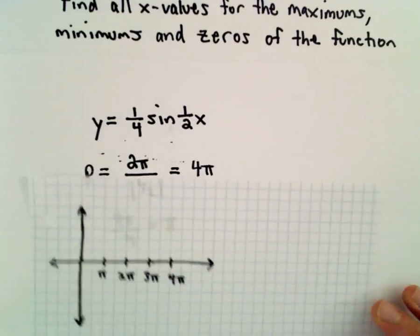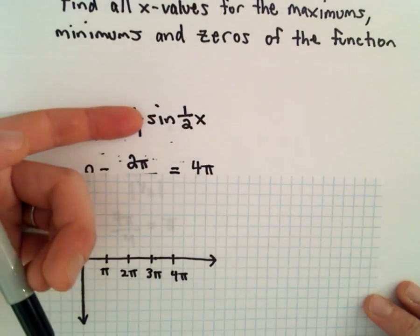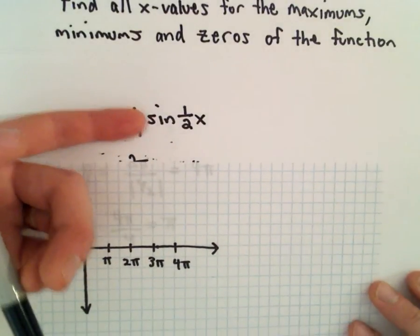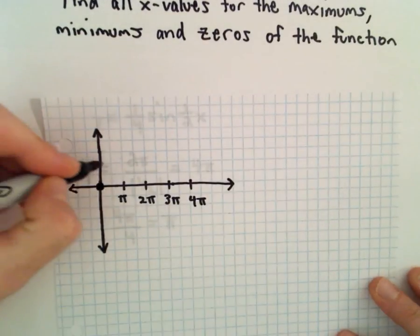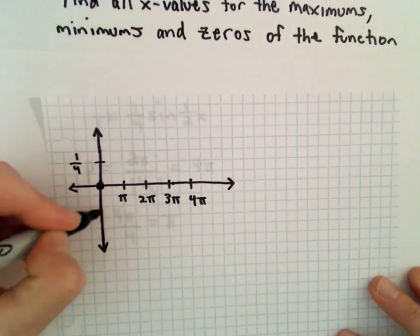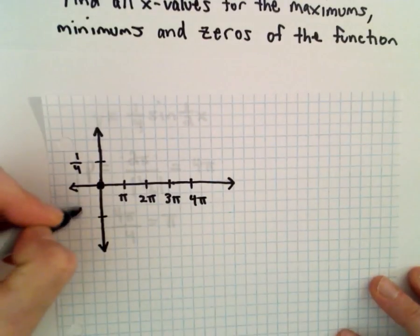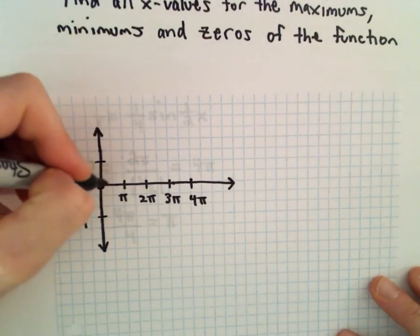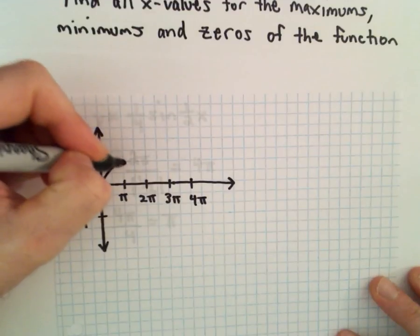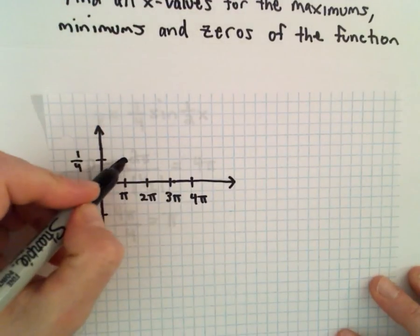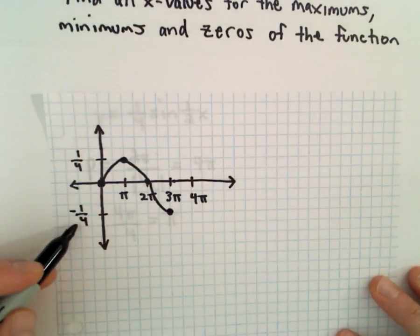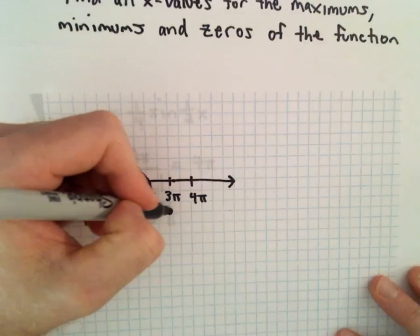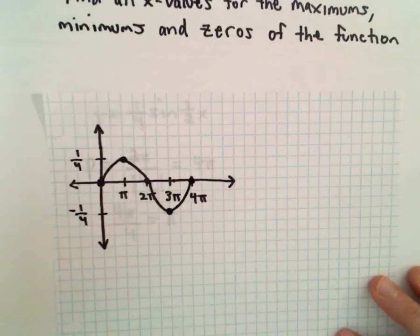So let's see. If we were to graph this, if we substituted in x equals zero, sine of zero is zero. So we would be at zero. Let's make this positive one-fourth. Down here, that'll be negative one-fourth. Again, definitely not to scale. So at pi, it'll peak out. At two pi, it's back at zero. At three pi, it'll bottom out. It'll be at negative one-fourth. And then at four pi, it'll be at zero.